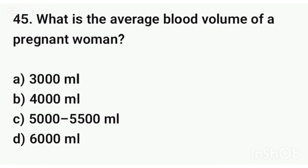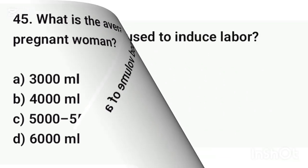Question number forty-five. What is the average blood volume of a pregnant woman? The correct answer is option C: 5,000 to 5,500 ml.